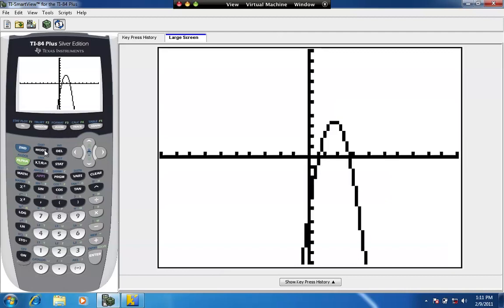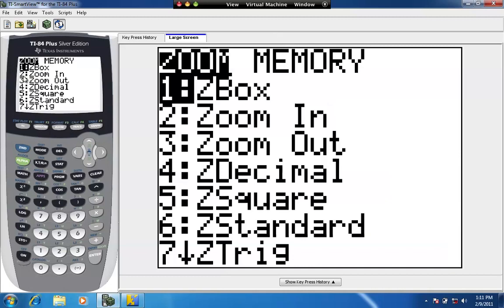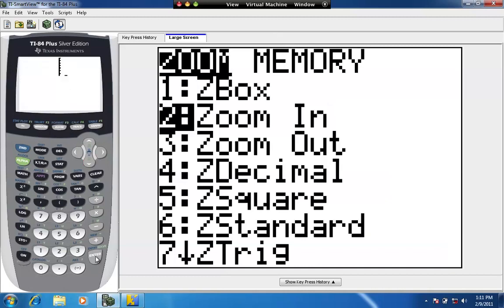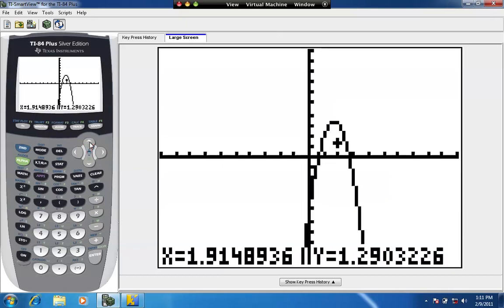So to zoom in, we're going to press the zoom key again, and we're going to move to number 2 and zoom in. Now that we're zooming in, you see this flashing cursor right in the center at the origin? We're going to use our arrow keys now to move that flashing cursor to be at the highest point of this graph. And you can see how the x and y values at the bottom of the viewing window change as you move your cursor back and forth. So there I am, right at the top of that parabola, and we're going to hit enter and zoom in right there.